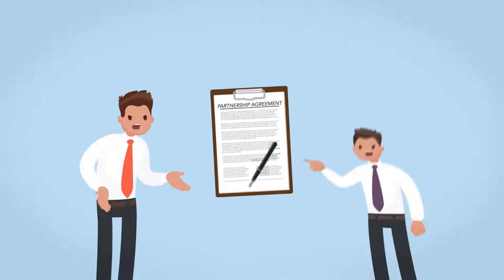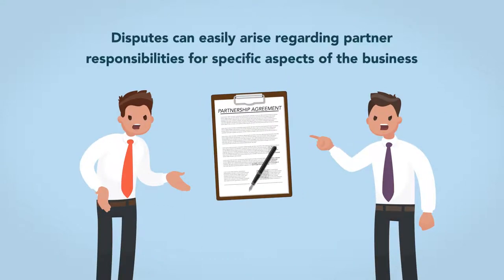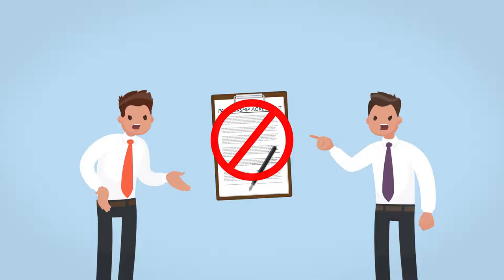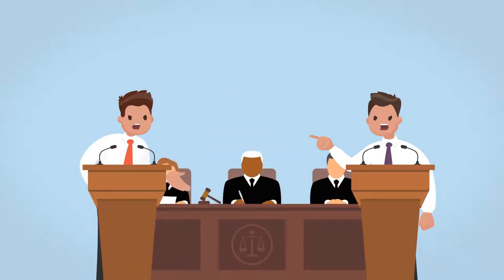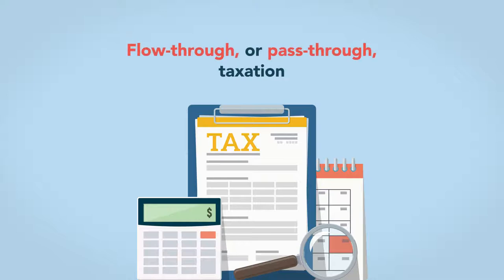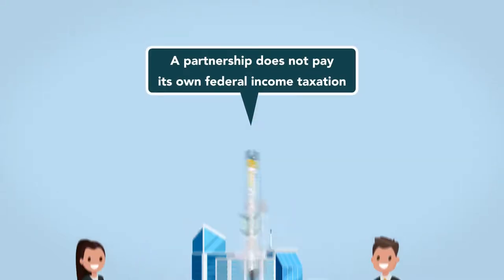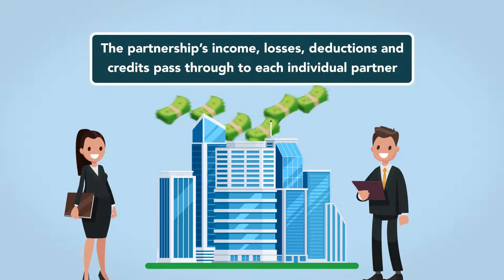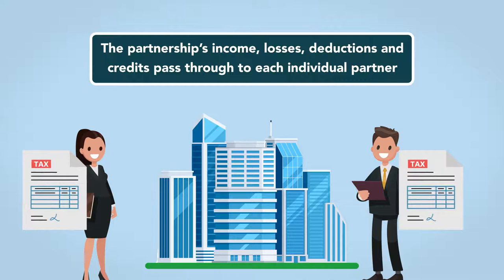Second, without a clearly written partnership agreement, disputes can easily arise regarding partner responsibilities for specific aspects of the business. The partnership agreement will explain how the partners can resolve their differences if a disagreement arises. When there is no provision for dispute resolution, the partners could pay thousands of dollars in legal fees going to court. Forming a general partnership has an important consequence: flow-through or pass-through taxation. A partnership does not pay its own federal income tax. Instead, the partnership's income, losses, deductions, and credits pass through to each individual partner who reports these amounts on his own personal income tax return.